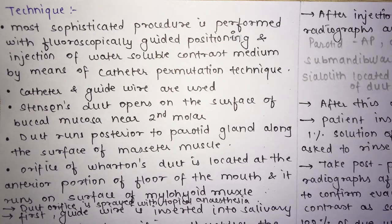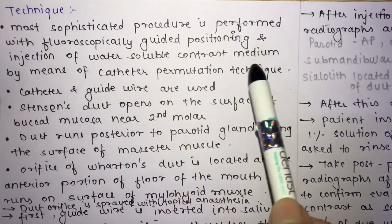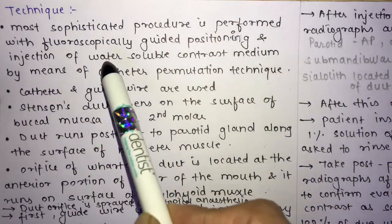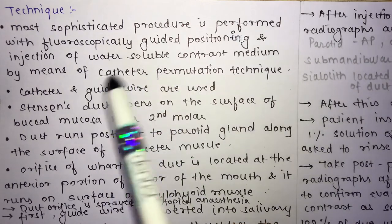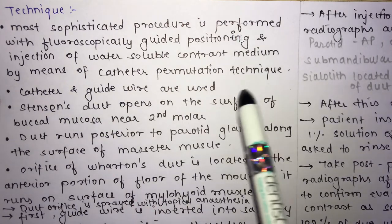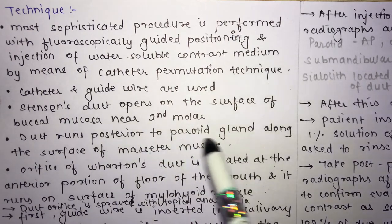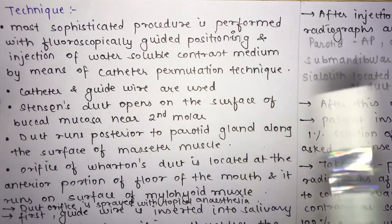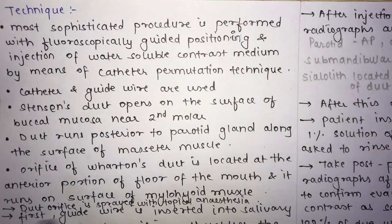The technique for sialography is a sophisticated procedure performed with fluoroscopically guided positioning and injection of a water-soluble contrast medium via a catheter cannulation technique. Stensen's duct opens near the second molar and runs posterior to the parotid gland along the masseter muscle. Wharton's duct orifice is located at the anterior portion of the floor of the mouth and runs on the surface of the mylohyoid muscle.